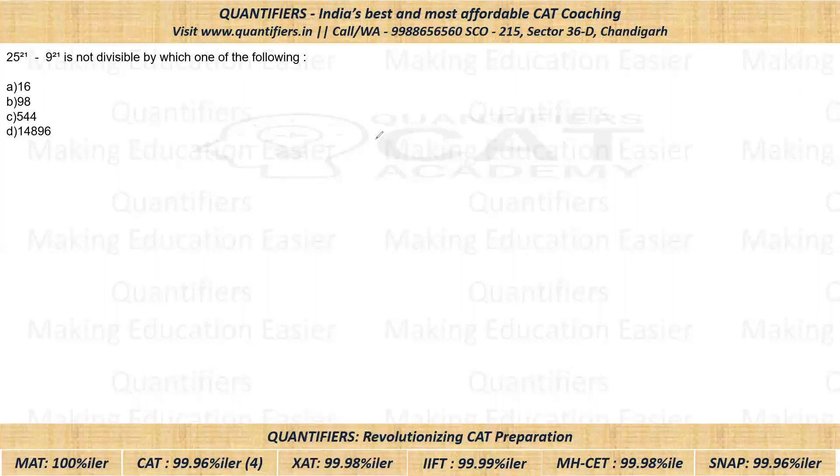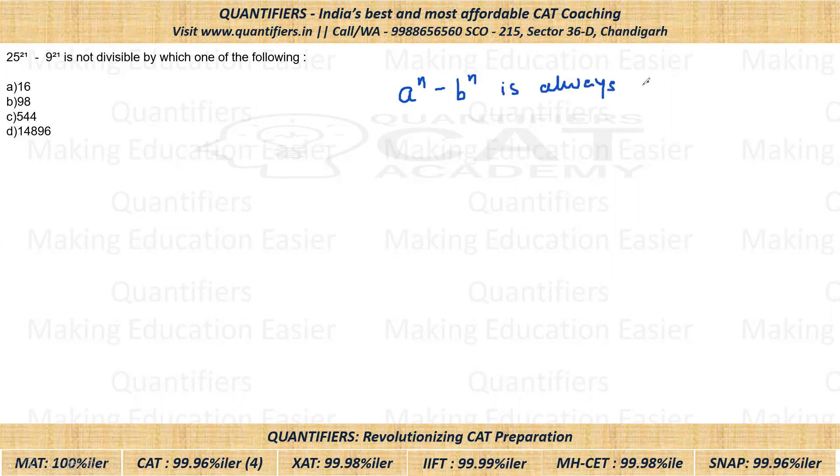Now students, first let me tell you a small concept, using which we can solve this question. The concept is that a raised to the power n minus b raised to the power n is always divisible by a minus b. This means that whatever n is, the power of a and b, whether it's odd or even, it will always be divisible by a minus b. Remember that the power of a and b must be the same.